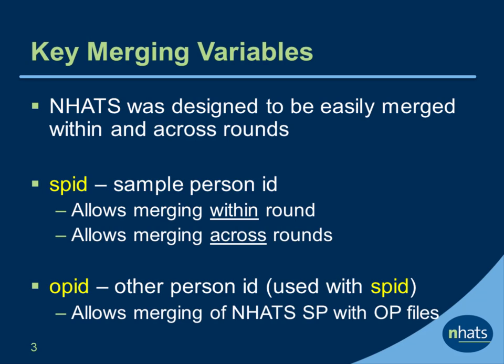NHATS was designed to be easily merged within and across rounds. All NHATS files include a unique sample person ID called the SPID. SPID allows for merging the various NHATS files within and across rounds. The OPID, or other person ID, when used with SPID, allows merging of NHATS SP files with OP files.